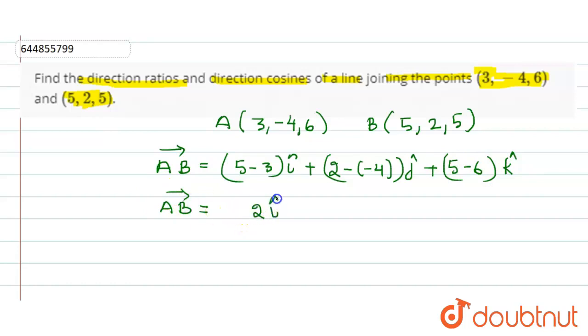are 2 i cap plus 6 j cap minus k cap. So the direction ratios are 2, 6, -1.